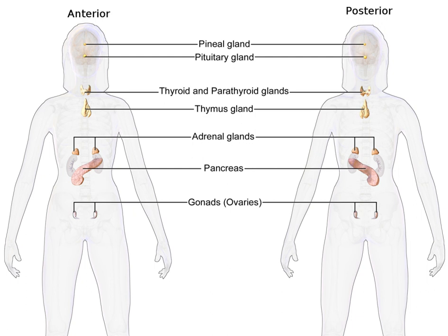Peptide hormones and protein hormones consist of 3 to more than 200 amino acid residues and can have a molecular mass as large as 31,000 g per mole. All hormones secreted by the pituitary gland are peptide hormones, as are leptin from adipocytes, ghrelin from the stomach, and insulin from the pancreas.